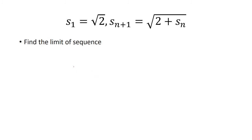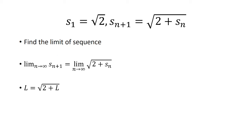Now we want to find the limit of the sequence. We take the limit of both sides of the recurrence. We're assuming the limit exists, so we call it L. Taking the limit on the left gives L, and on the right, using limit properties, we get the square root of the limit as n approaches infinity of 2 plus s_n, which is just the square root of 2 plus L.